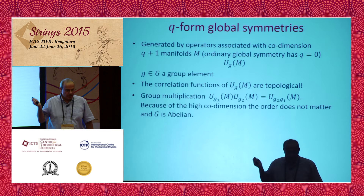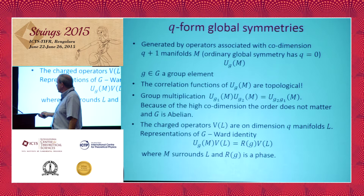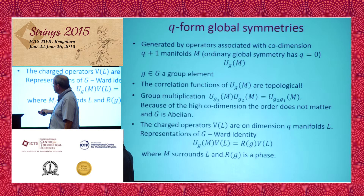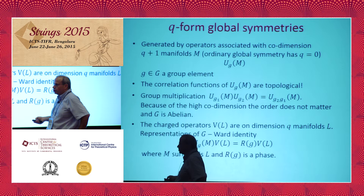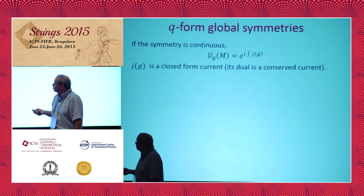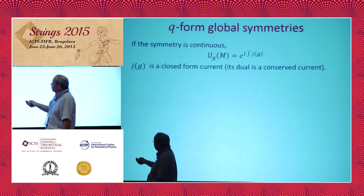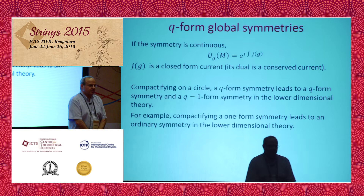The charged objects are associated with lines or higher-dimensional objects — L could be a line or more generally a Q-manifold. The symmetry is represented by M surrounding L. So the symmetry operators are U and the charged operators are the V's on a Q-dimensional manifold L. If the symmetry is continuous, just as for ordinary symmetry, we can write U as an exponential of an integral where J has a different number of indices than for ordinary symmetries.